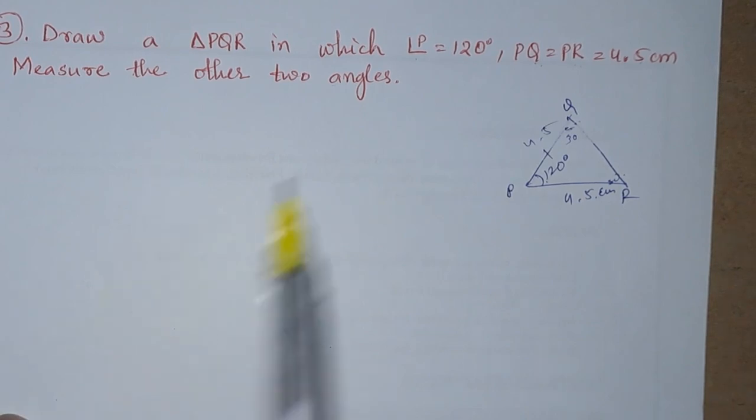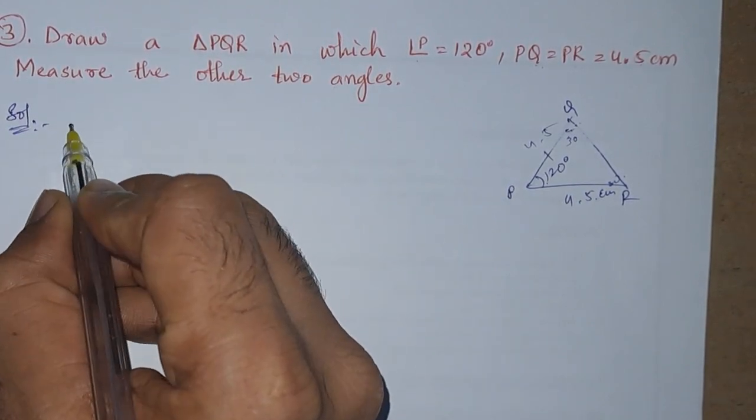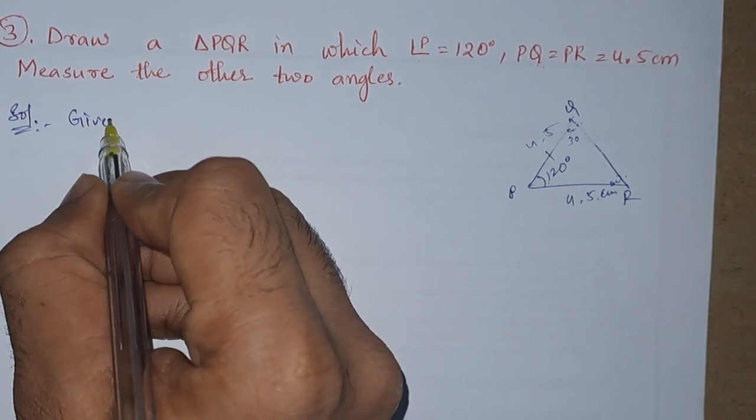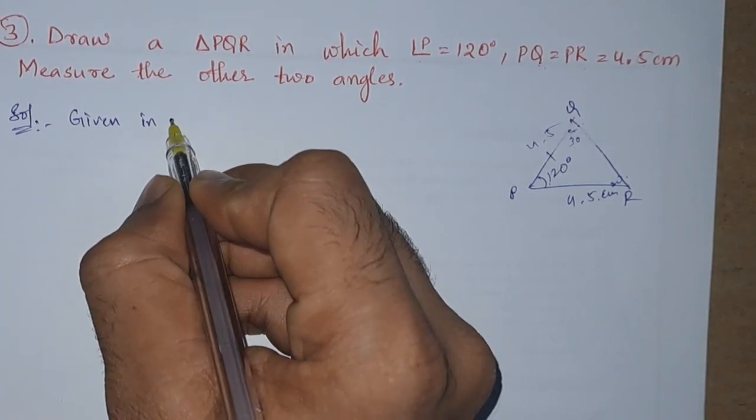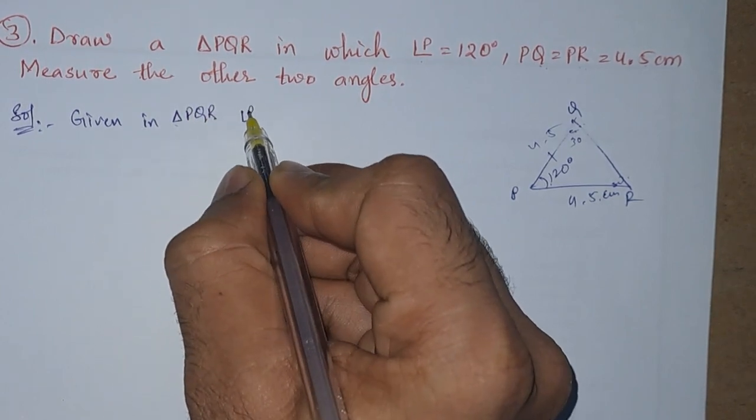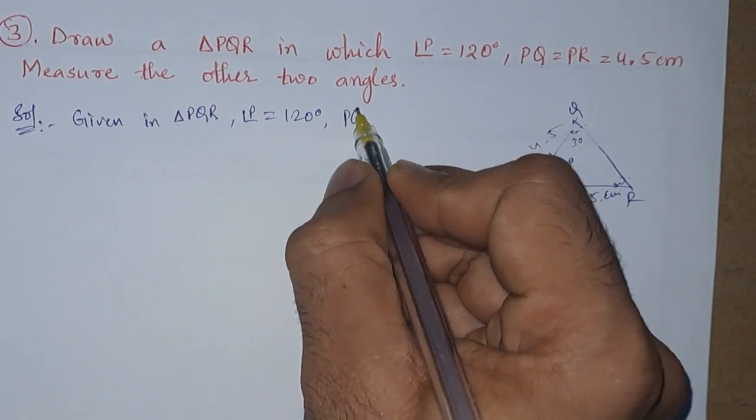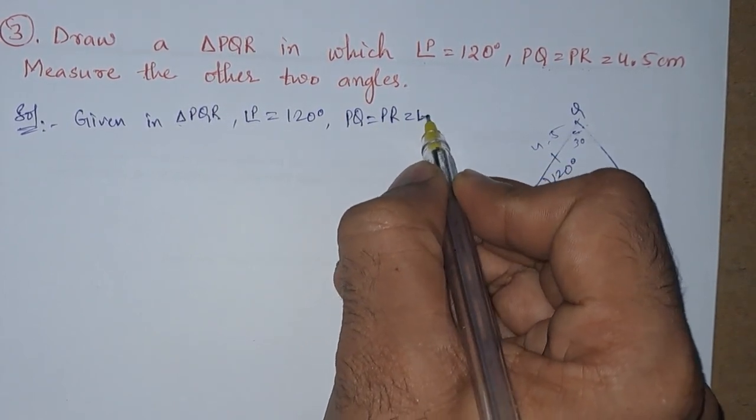So in the solution, first we will write down what is given. Given in triangle PQR: angle P is 120 degrees and PQ equals PR equals 4.5 centimeters.